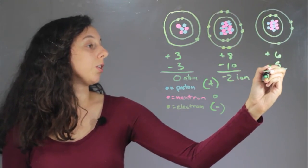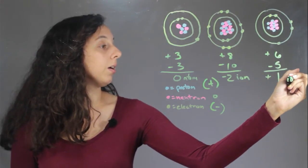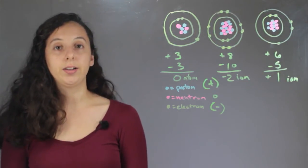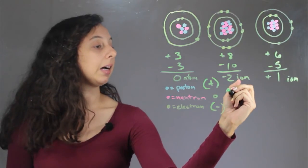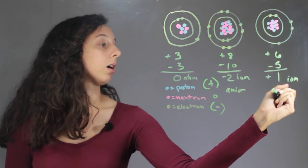We just have an overall charge of plus one. So it's also an ion. Now when an ion is negative, we call it an anion. When an ion is positive, we call it a cation.